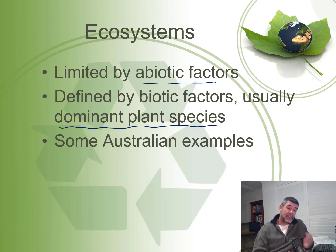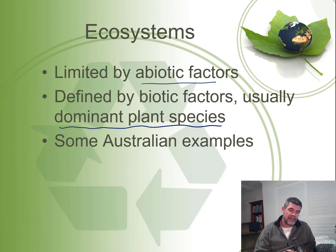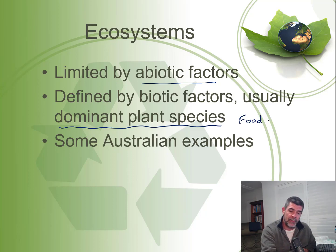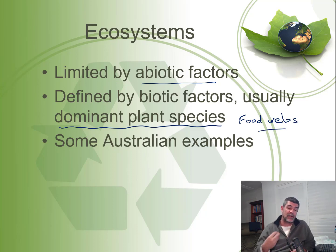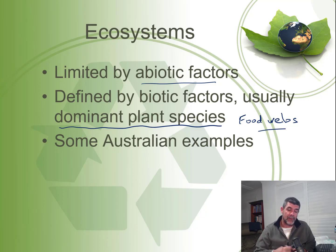So ecosystems are limited by abiotic factors and defined by their biotic factors. That's one of the reasons why setting up food chains and food webs are so critically important, because the producers at the base of each food web are going to affect the other organisms that are part of that ecosystem.